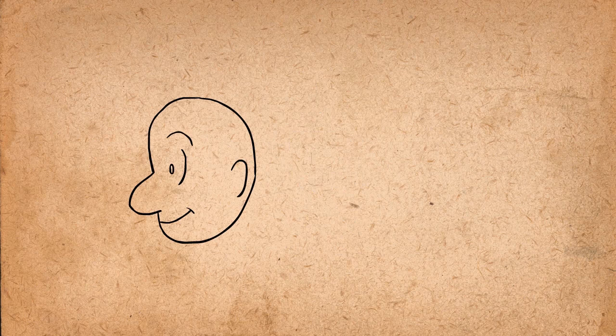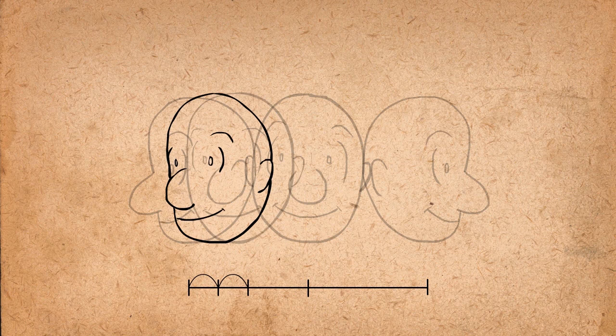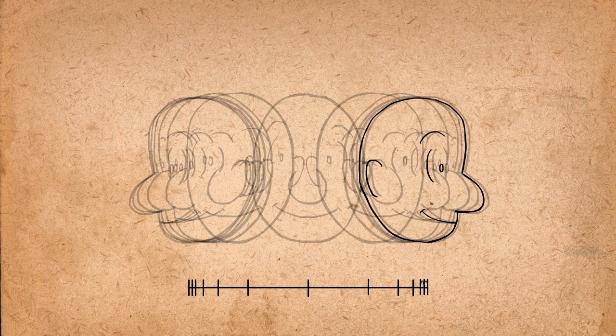To use this principle in 2D animation, you take your extreme poses, draw a single in between, and then draw in between those, then only in between the drawings closest to the extremes, until you're satisfied with the amount of slow in and slow out.